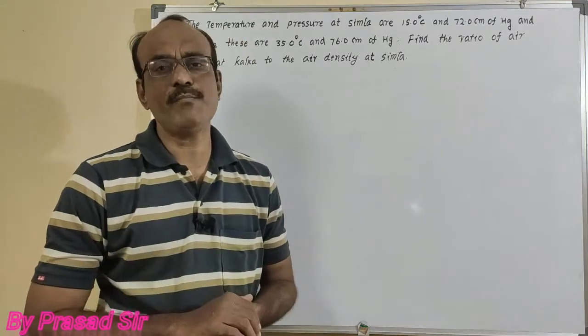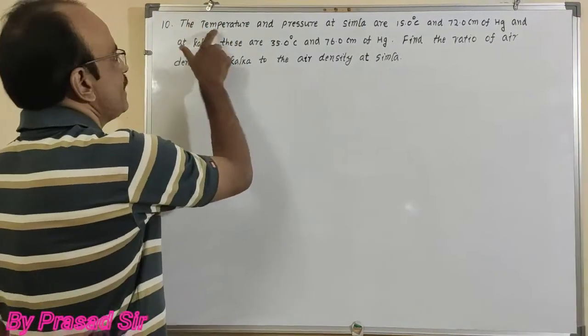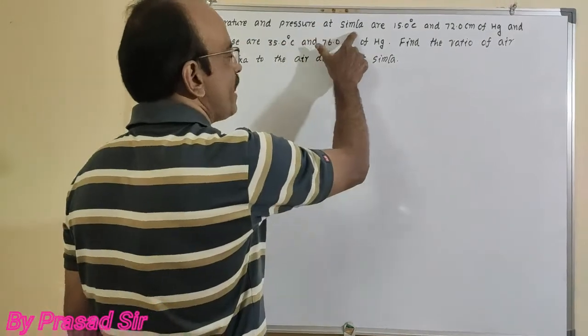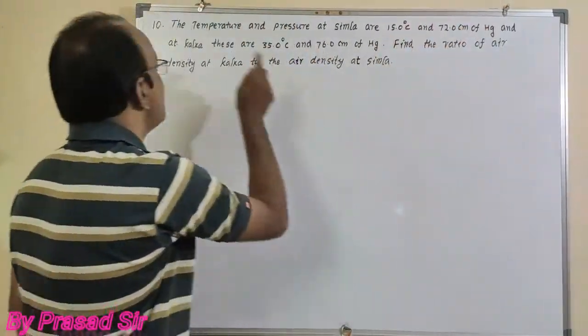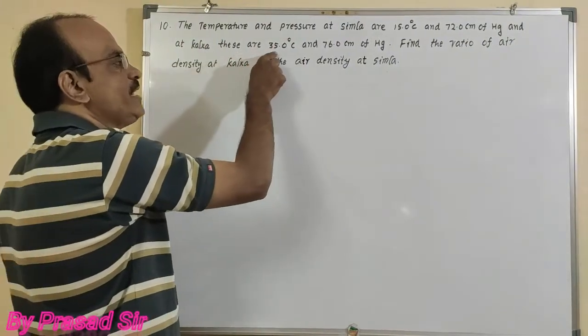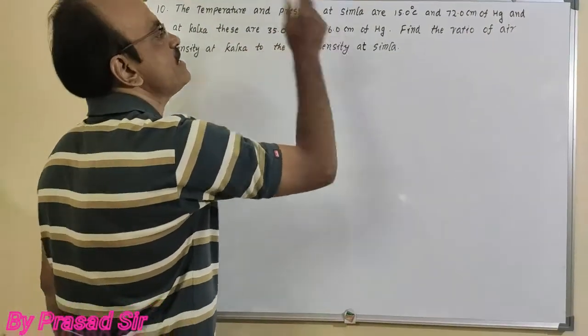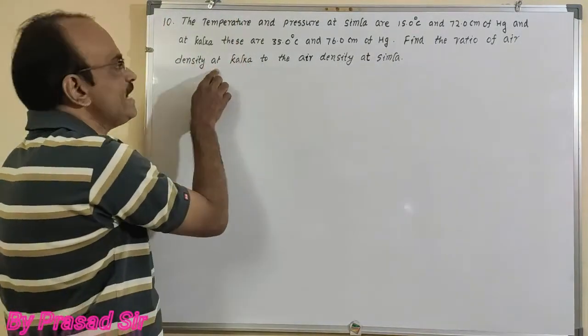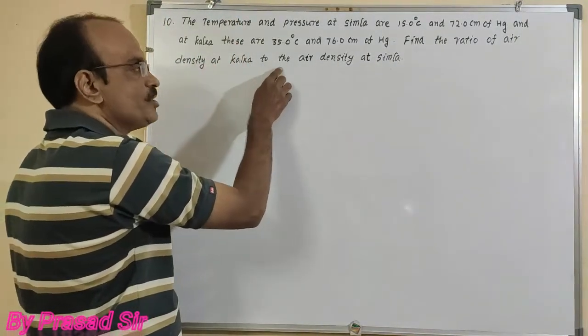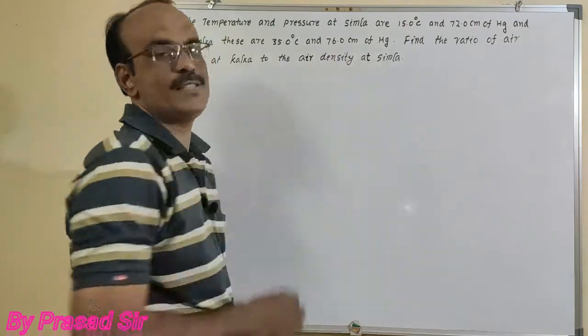Here's question number 10. The temperature and pressure at Simla are 15 degrees centigrade and 72 centimeters of mercury, and at Calca they are 35 degrees centigrade and 76 centimeters of mercury. Find the ratio of air densities at Calca to the air density at Simla.